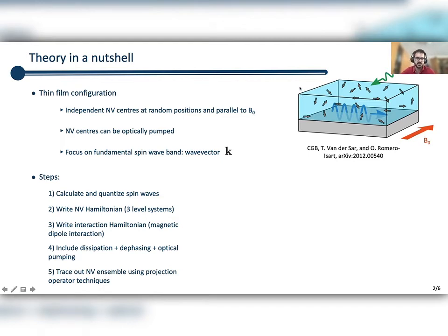What this allows us to do is to get an effective dynamical equation only for the spin waves where the effect of this ensemble of NV centers appears as effective coherent and dissipative terms.